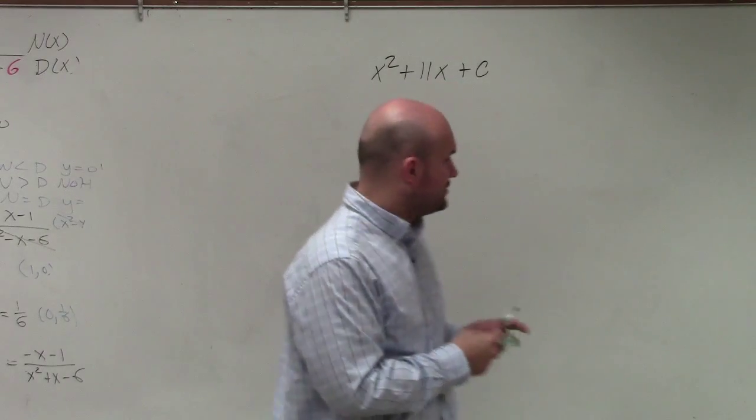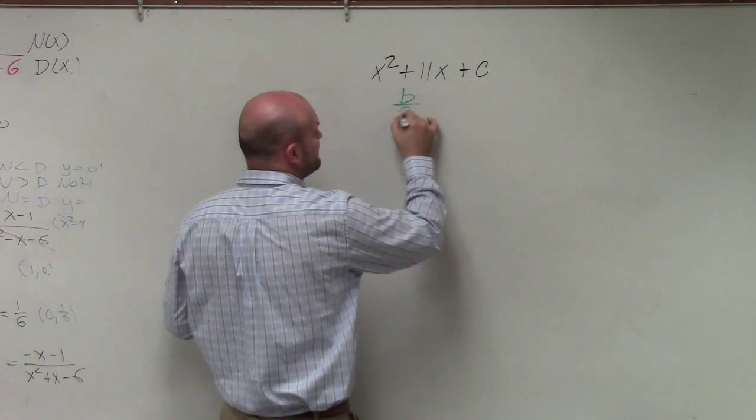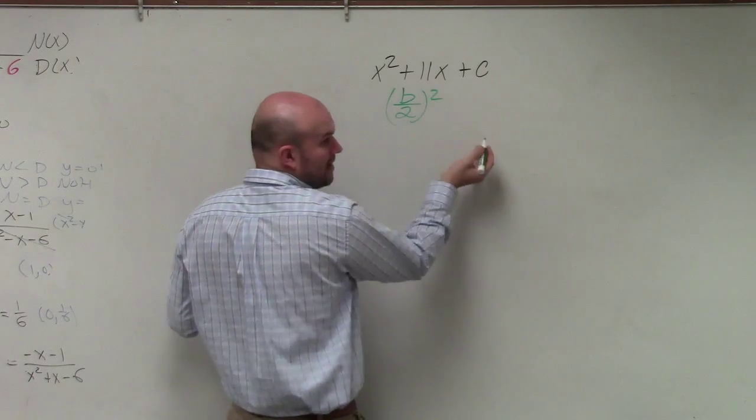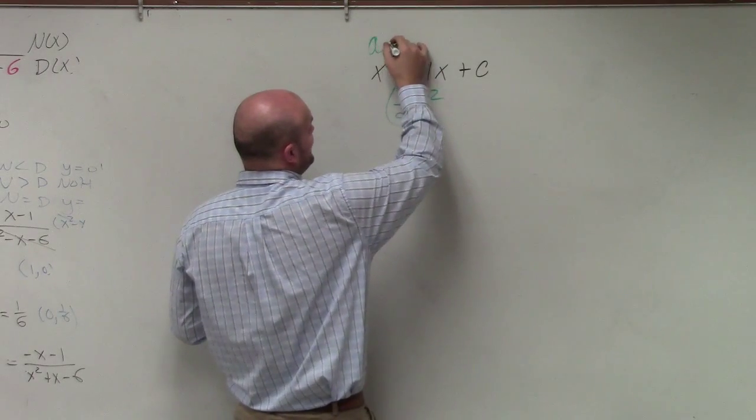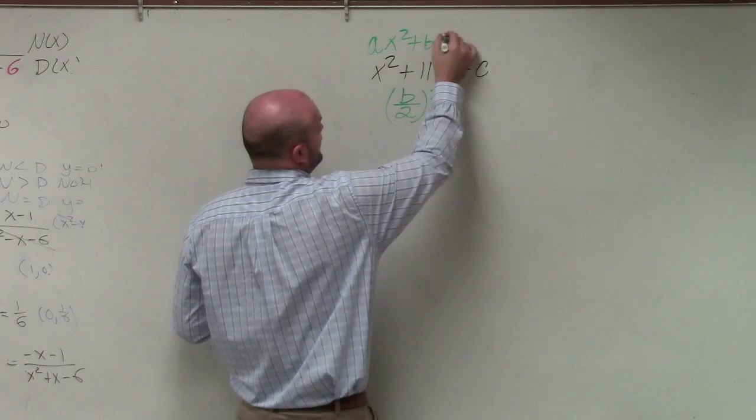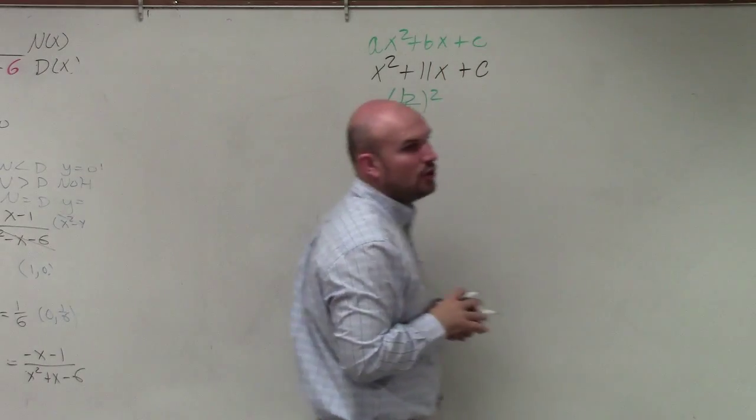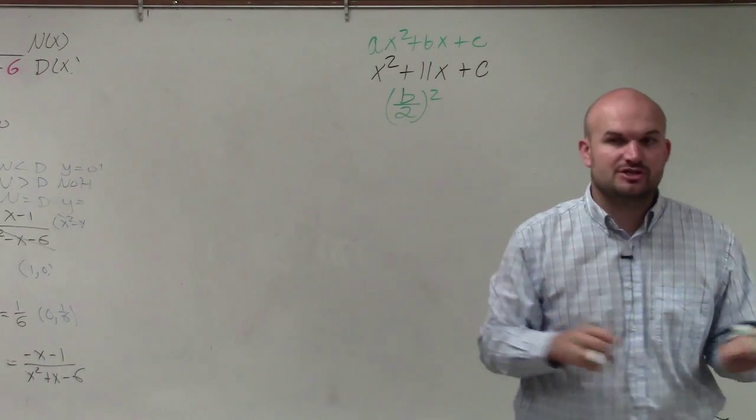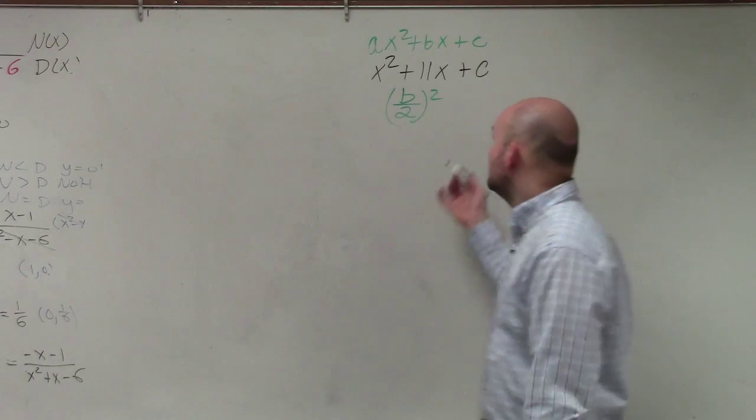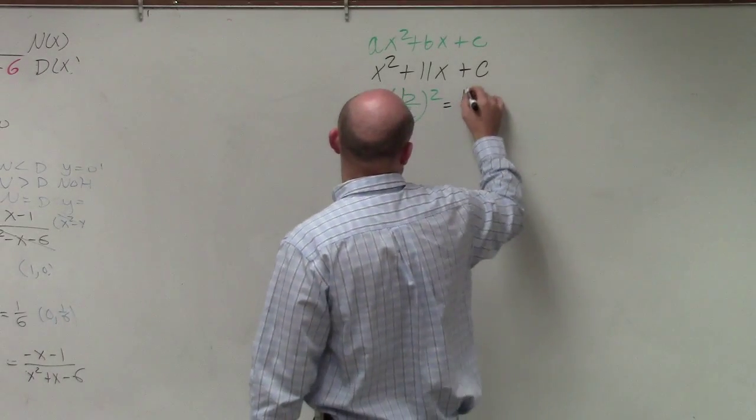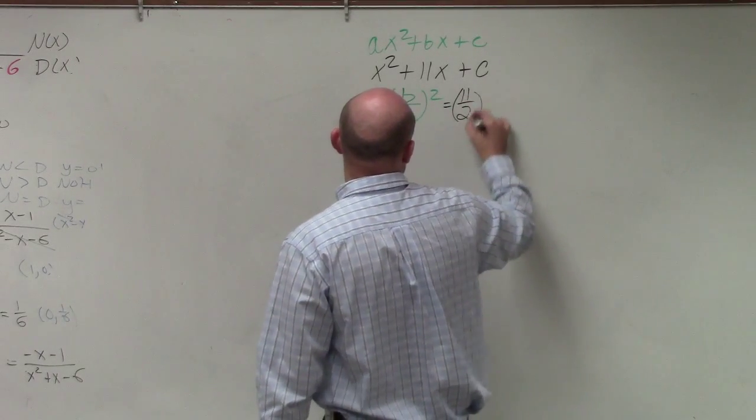All you had to do to find the value that completes the square is just do b divided by 2 and square it. Remember, b comes from our standard form of a quadratic, which is your coefficient of your linear term, your linear variable, which is x. Therefore, that's simply going to be 11 divided by 2 squared.